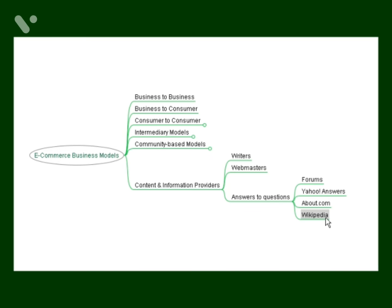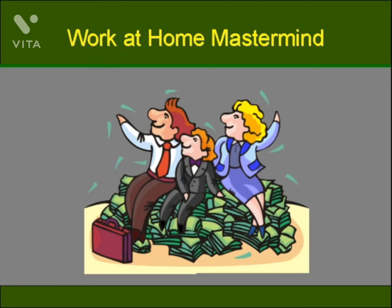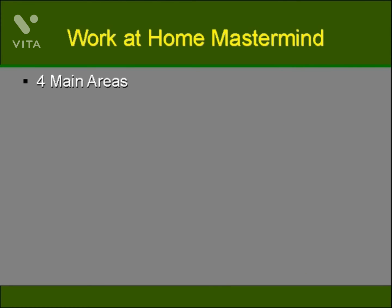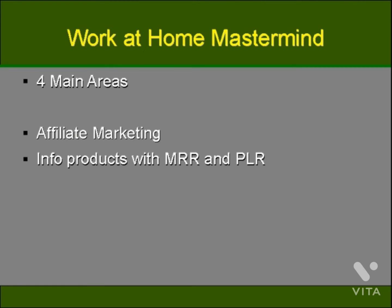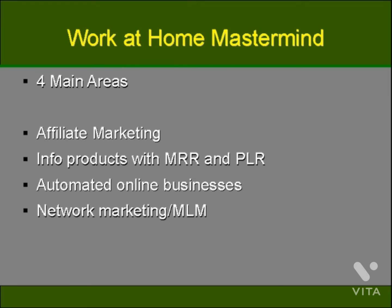You can wind up a customer if your question is answered with the need to buy a product or service to solve your dilemma. More and more of these types of websites are popping up, generating a great deal of money for site owners. Here are some proven ways to profit online even if you're a total internet newcomer. There are four main areas: affiliate marketing, selling information products with master resale rights or private label rights, automated online businesses, and network marketing or multi-level marketing, otherwise known as MLM.